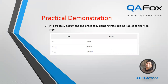I will practically demonstrate adding an HTML table to an HTML web page. The table I'm going to demonstrate has two columns — the first column is 'id' and the second column is 'name'. Under the id column we have IDs of people, and for each ID there is an associated name: 001 Arun, 002 Varun, 003 Tarun. Three rows with three IDs and three associated names.